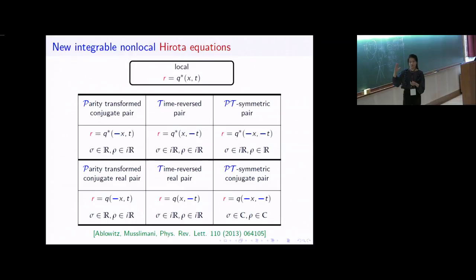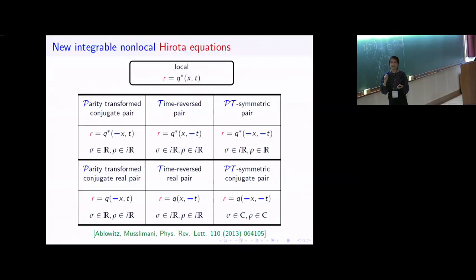We have looked at the Hirota equation, which is the higher order extension of the nonlinear Schrödinger equation. Using Hirota's method to construct solutions we found a new type of solution which they didn't find using the inverse scattering method.